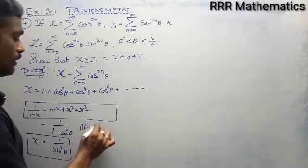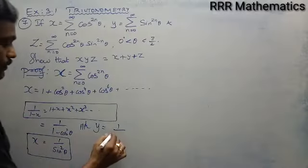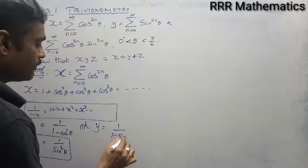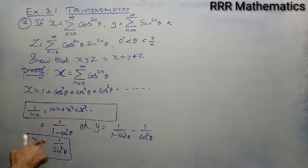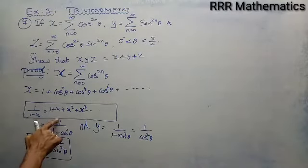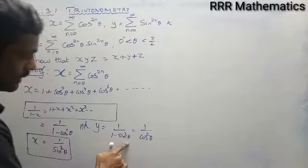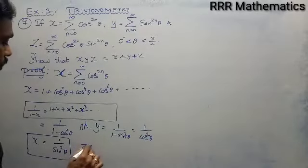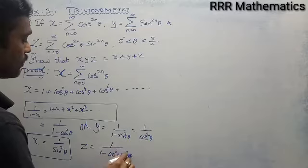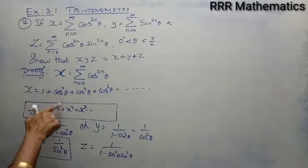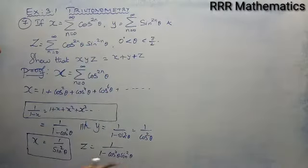Similarly, my y is 1 by 1 minus sin square theta, which equals 1 by cos square theta. And z equals 1 by 1 minus cos square theta into sin square theta. Here in x I have cos square theta in place of x, in y I have sin square theta, and in z I have cos square theta into sin square theta. Using the identities 1 minus cos square theta equals sin square theta and 1 minus sin square theta equals cos square theta, I have replaced accordingly.